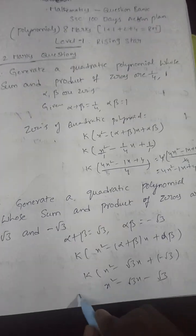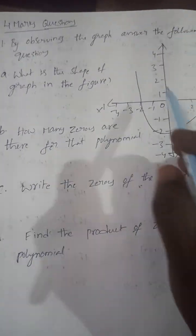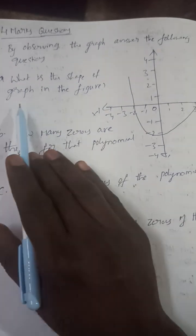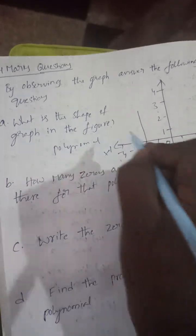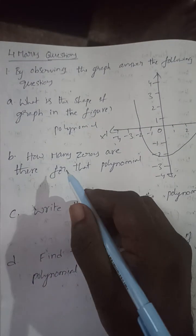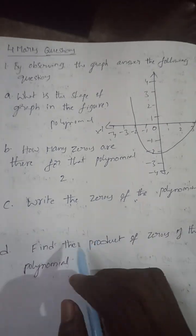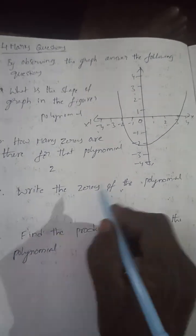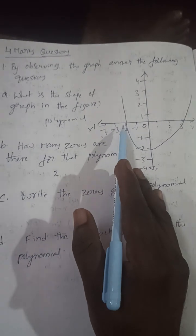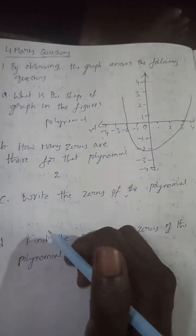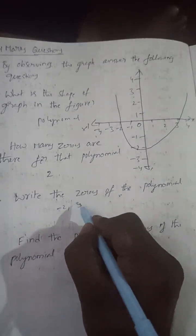Next, by observing the graph, answer the following questions. What is the shape of the graph? The shape is a polynomial curve. How many zeros are there for that polynomial? Two zeros. What are the zeros? The zeros are where the graph touches the x-axis: minus two and three.